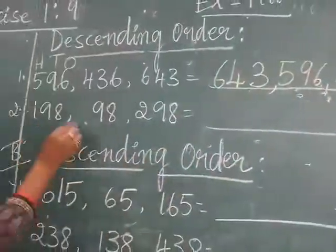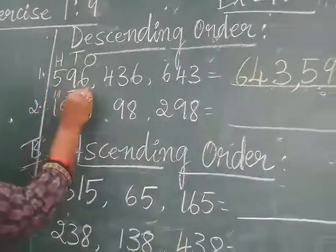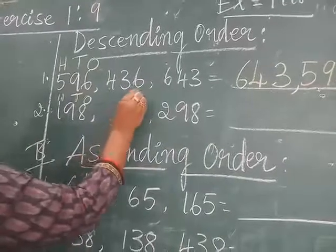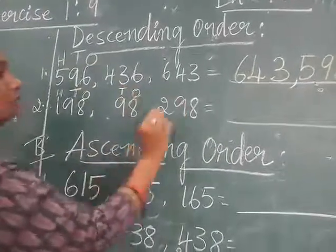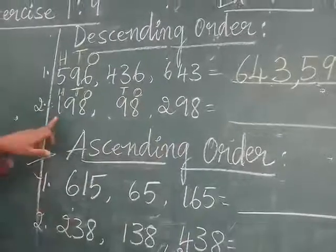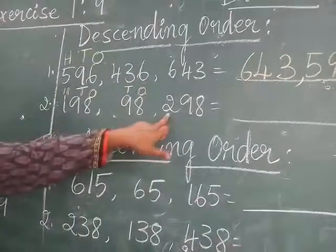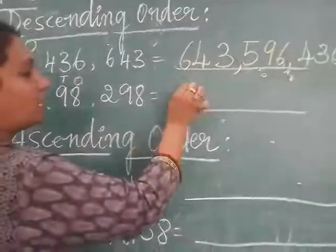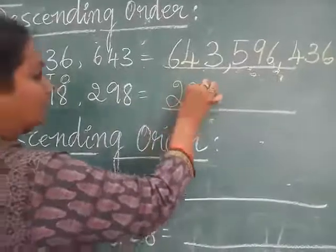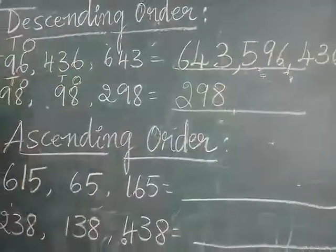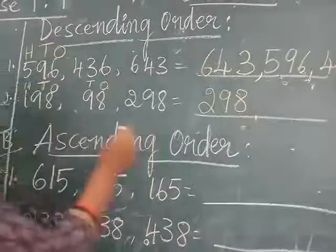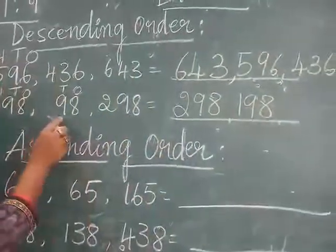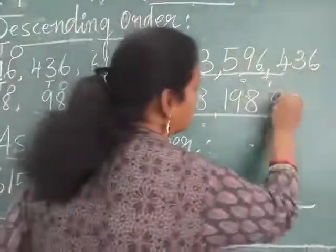The same thing — next also you have to write H, T, O. Here if you see, you can see only two numbers, means you have to write T and O. In 100's place: 1 is there here, 2 is there here — means this is the largest number, so you have to write 198 first. The next one is 198, then 98.